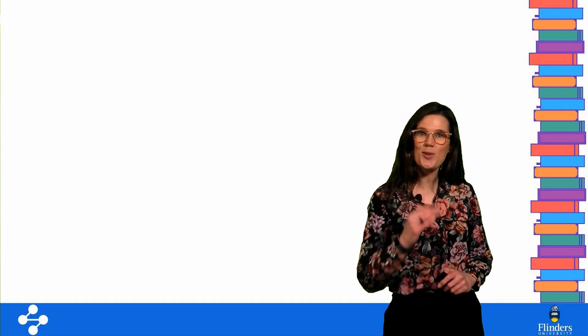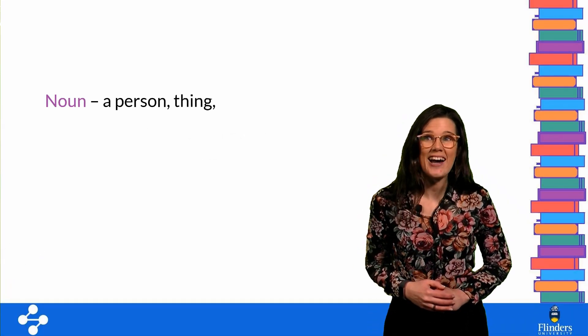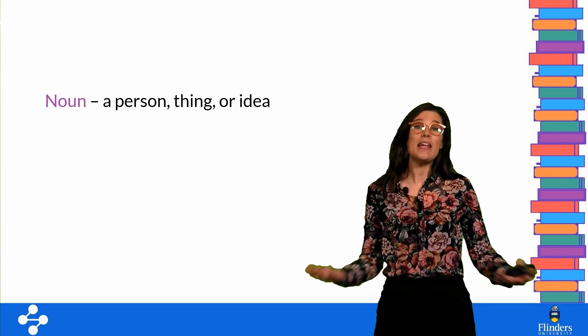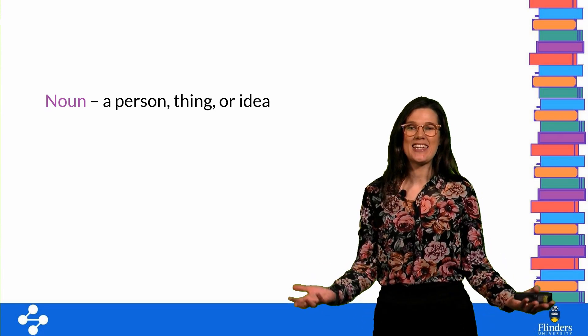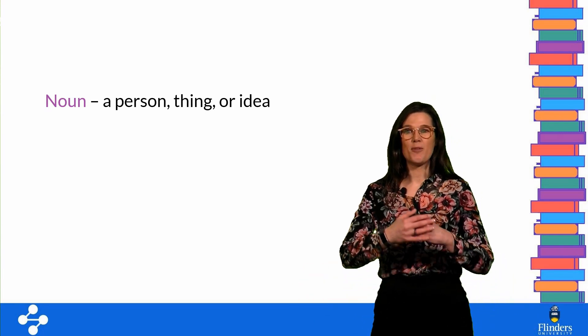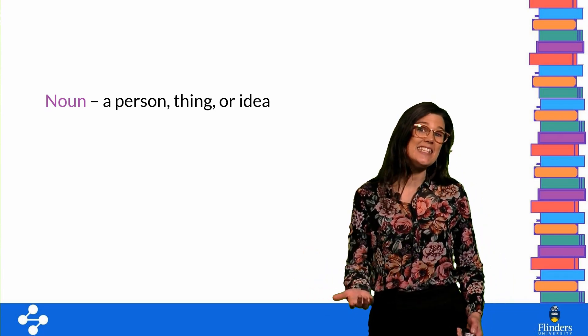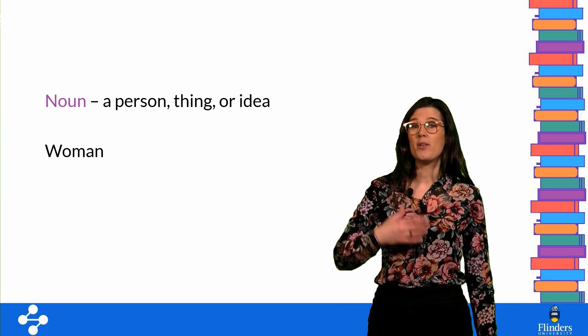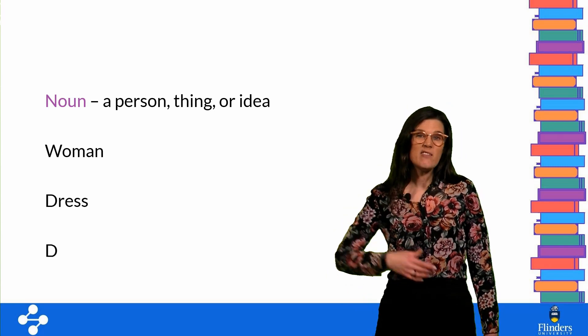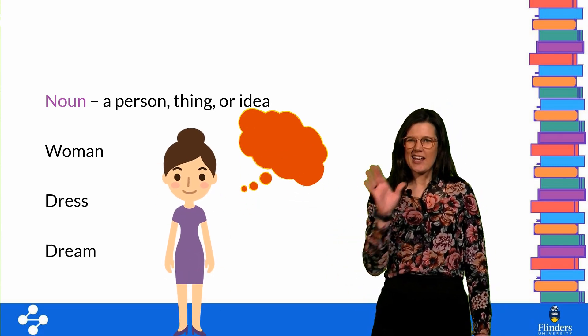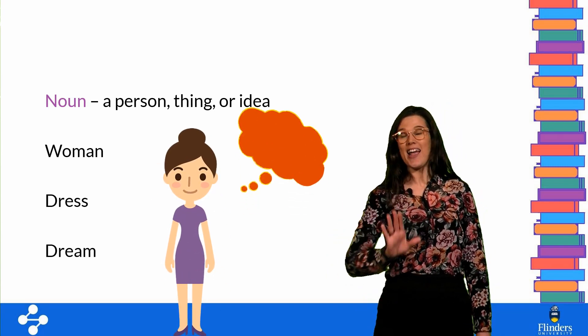Now I'm sure you all know that a noun is a name of something. It can be the name of a person, a thing, or an idea. For example, woman, dress, or dream. That's the basics.